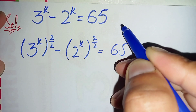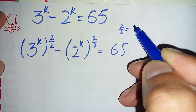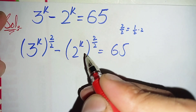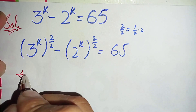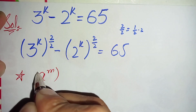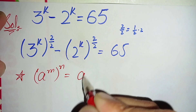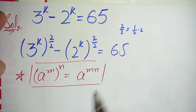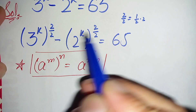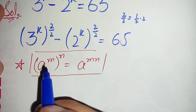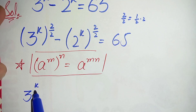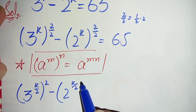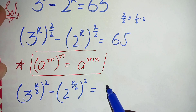Next we can write 2 by 2 as 1 by 2 times 2. So we will use the exponential math property: a raised to power m, whole raised to power n, can also be written as a raised to power m times n. Using this property, the equation becomes 3 raised to power k by 2, whole raised to power 2, minus 2 raised to power k by 2, whole raised to power 2, is equal to 65.